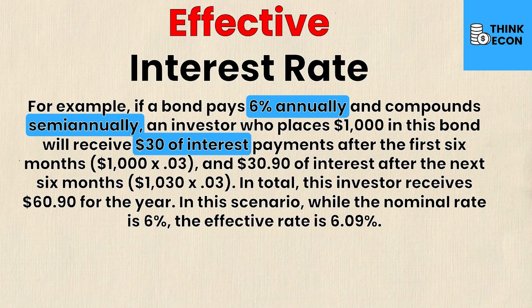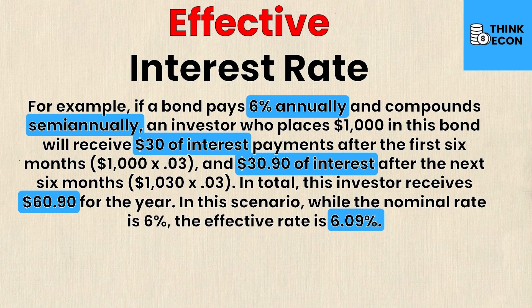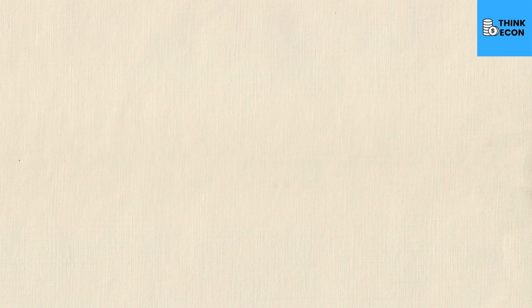The investor also receives thirty dollars and ninety cents of interest after the next six months, which is one thousand thirty dollars times 0.03. The thirty dollars earned in interest during the first six months was then applied to the new balance of one thousand thirty, rather than just one thousand. In total the investor receives sixty dollars and ninety cents for the year. The nominal rate would suggest they earn sixty dollars, but they actually earn sixty dollars and ninety cents — so while the nominal rate is six percent, the effective rate is 6.09 percent.